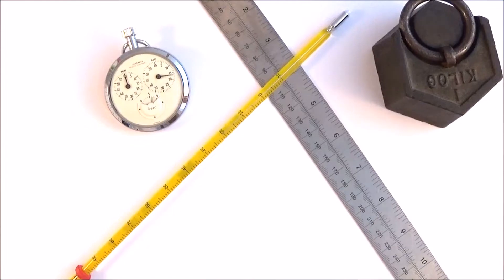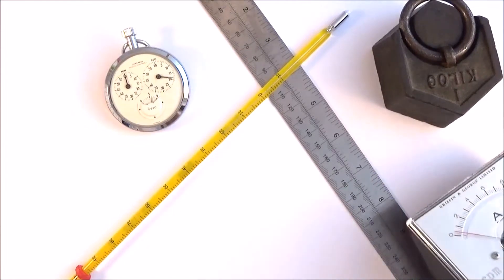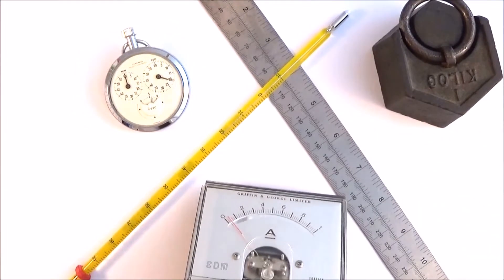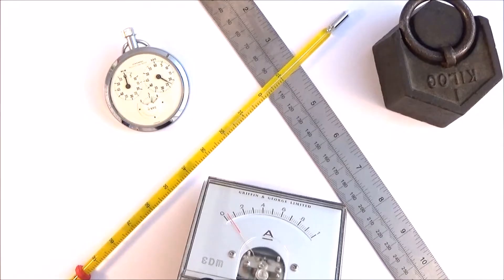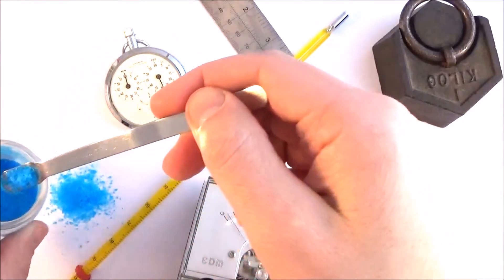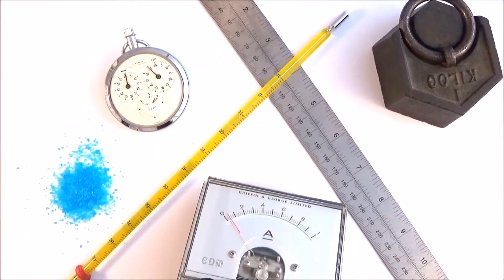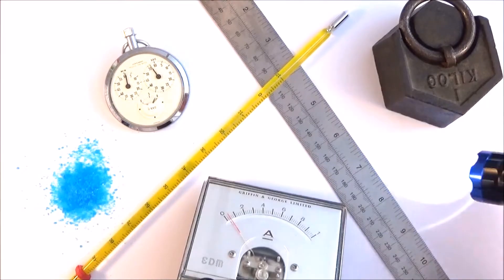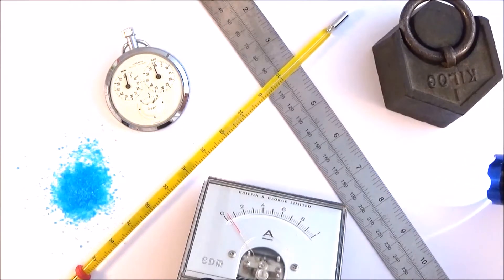That's fairly straightforward. It gets more tricky because there are three more. One is electric current, measured in amps. We also have the amount of substance, which is the mole. There's one more you don't need to be as aware of for the course: the candela, the unit of brightness.